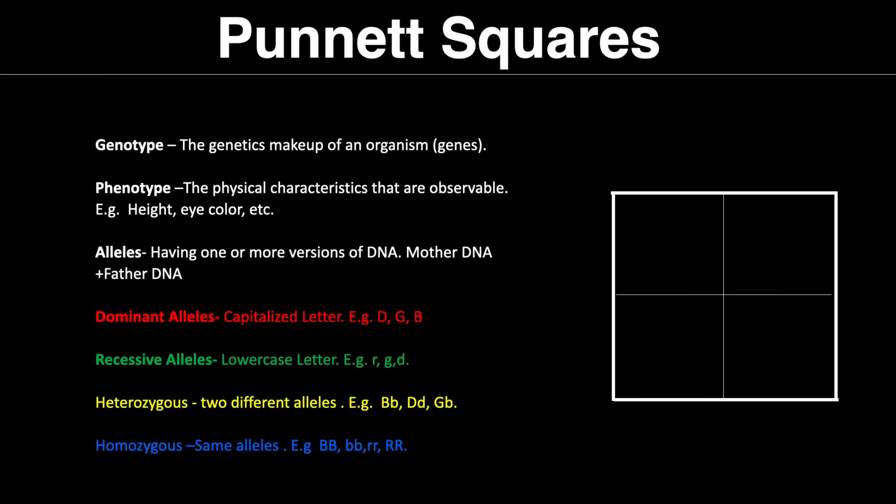Then we have heterozygous, which means different. So heterozygous means two different alleles, represented in yellow. And then we have homozygous, represented in blue — these are the same alleles. It doesn't matter if it's capitalized or lowercase; if it's the same, it is called homozygous.